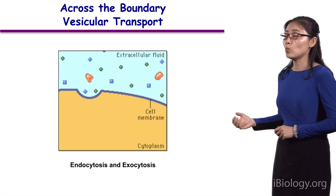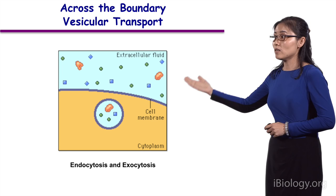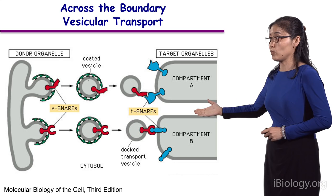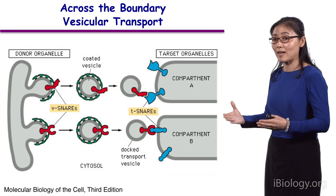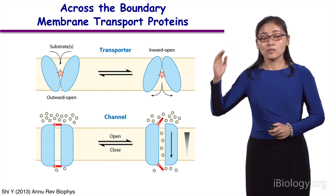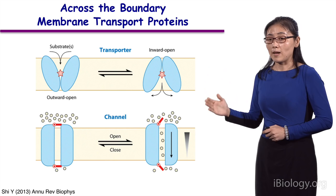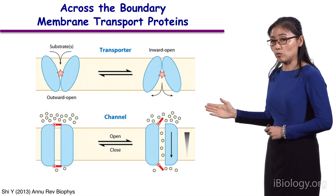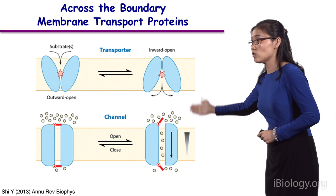Before I go to my favorite topic — transport proteins — let me remind you there's one way of group translocation known as vesicular transport. Shown here is a simplified cartoon of endocytosis and exocytosis. In addition, there's translocation between different compartments within the cell. It's vesicular transport that allows the exchange of chemicals in large quantity, with less selectivity between different compartments. In addition to simple diffusion and vesicular transport, there are a third and major mechanism for membrane transport mediated by transport proteins — two major classes: transporters at the top and channels at the bottom.